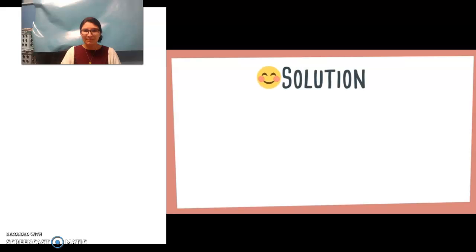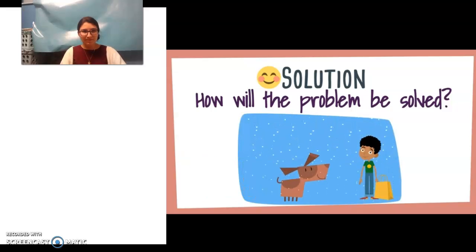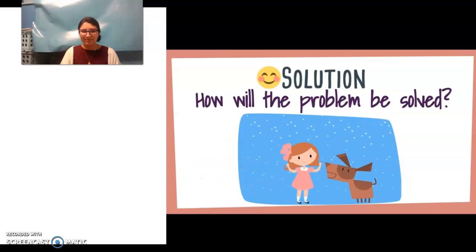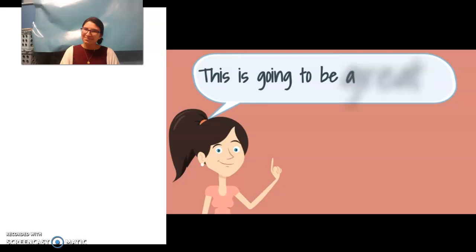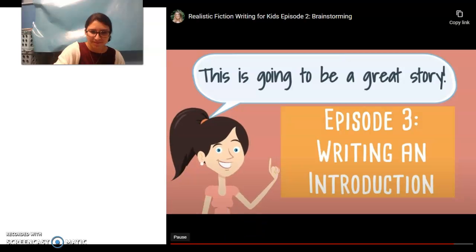Finally, I need a solution to the problem. How will that problem be solved in the end? Maybe a stranger will see Sam and he'll lure him with a piece of food from his grocery bag. And then Mary and Sam can go home to be warm and safe. Wow, I think this is going to be a great story. Now that I have a plan, check out episode three to see how I start writing.